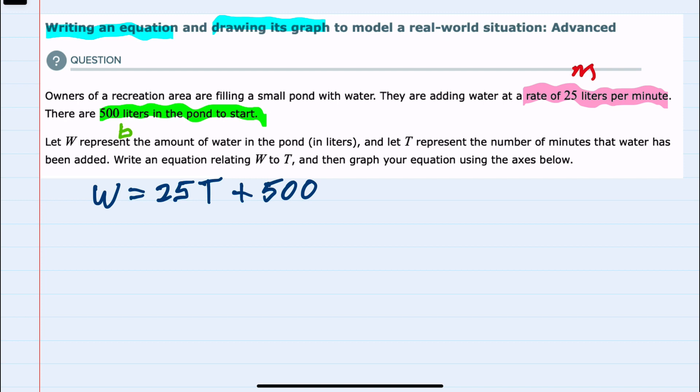So we can see that at time zero we would only have 500 liters and then for each minute after that 25 liters is being added. And then to graph the equation we know that at time zero the value is 500 and that for each minute we advance that's going to go up by 25 liters so our slope will be upwards.